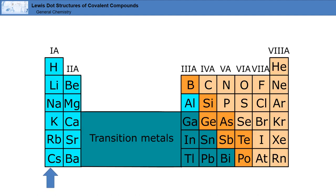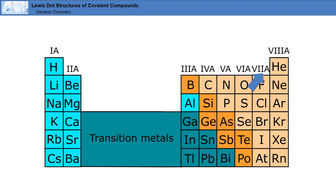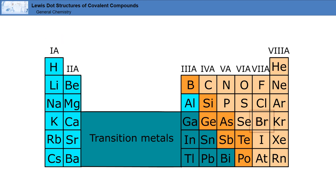The number of valence electrons varies by element. For the main group elements, the number is equal to the group number that the element belongs to. For example, sodium belongs to group 1a, so it has one valence electron. Bromine belongs to group 7a and has seven valence electrons.